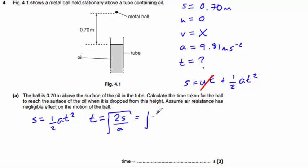So that gives us 2 times 0.7 divided by 9.81. We're going to take the square root of that, which gives us 0.38 seconds.